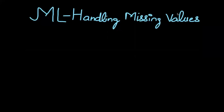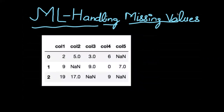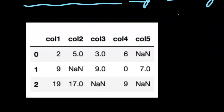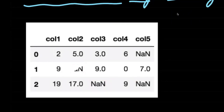Hello guys, welcome to GeeksForGeeks. In this video we'll be talking about how we can handle missing values in machine learning. If we are given a dataset with five different columns, some of these values will be NaN, or in an Excel sheet you will see an empty cell. Whether it's an empty cell or an NaN value, that means there is a missing value there.